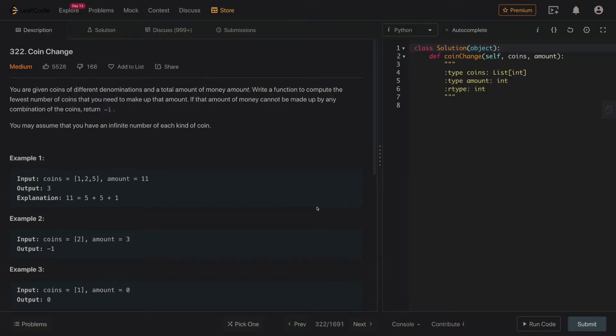You can pause the video and read the question to yourself. Here for example we have coins and the amount. Our job is to figure out the minimum number of coins it would take to break the amount of 11.